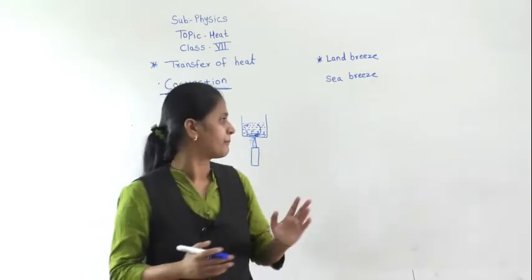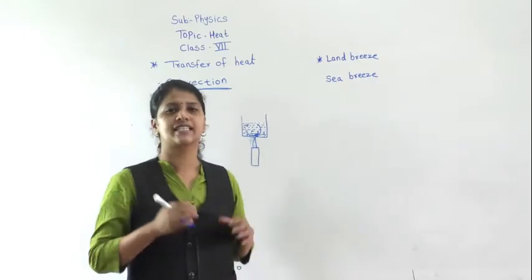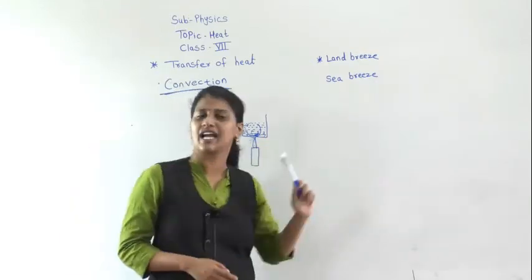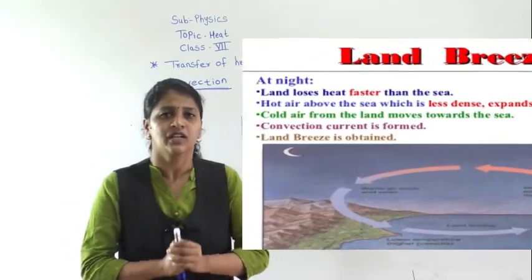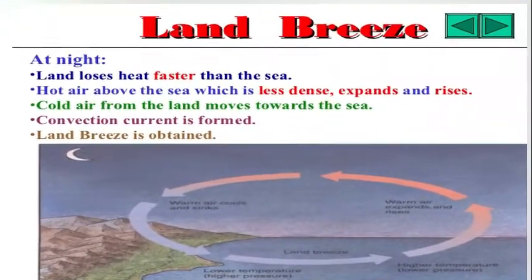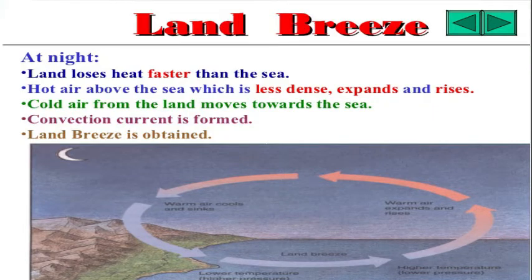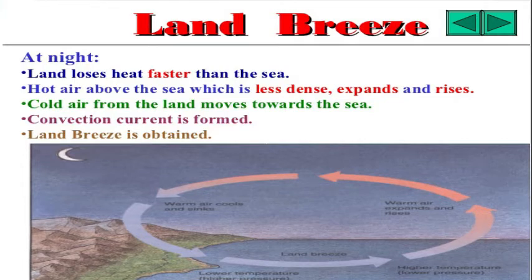One application we see in day-to-day life is near the sea coast — the land breeze and sea breeze. During night time, the land cools very fast while the sea cools slowly. So the air blows from land to sea. This is called land breeze, and it takes place during the night time.